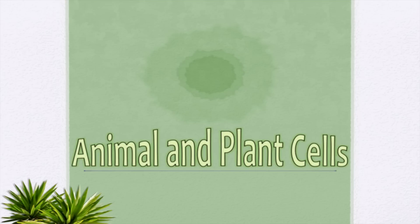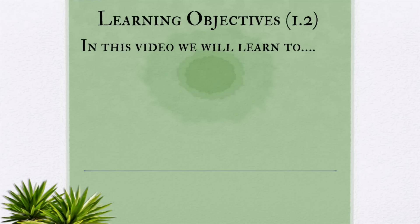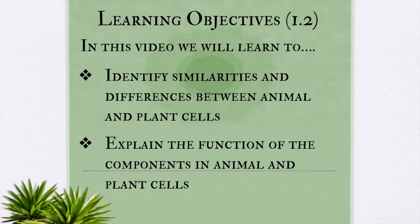Hello everybody, welcome back to another exciting science video. Today we are going to be learning about animal and plant cells. Our learning objectives are: we will learn to identify similarities and differences between animal and plant cells, and we will also learn to explain the function of the components in animal and plant cells.